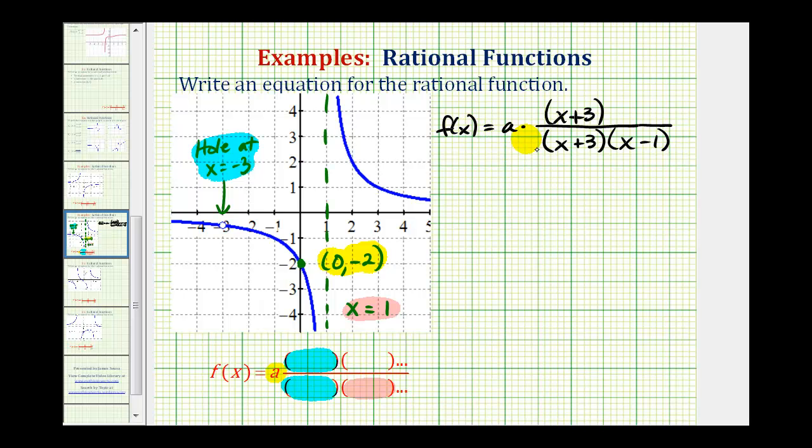Now we have everything but the value of a. And we can determine the value of a using the y-intercept. If this function contains the point zero, negative two, that means f of zero must equal negative two.